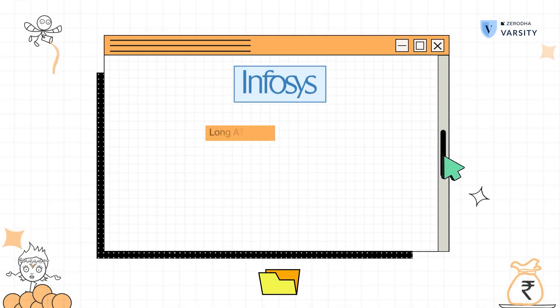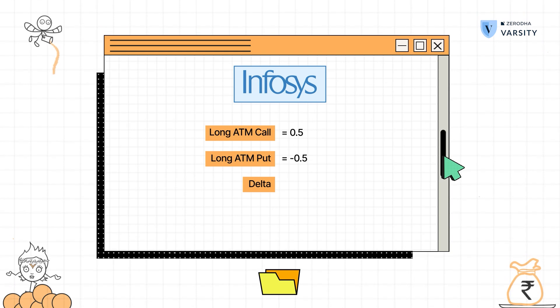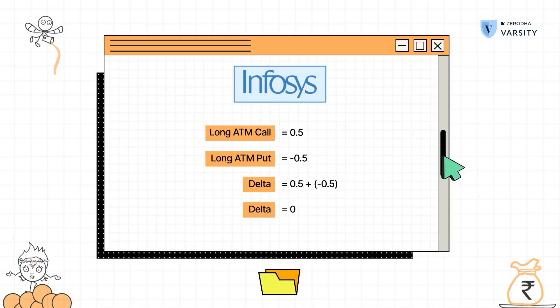Whenever you have multiple option positions in your portfolio belonging to the same underlying and the same expiry, you can always add up the deltas. For example, assume I have an at the money call option of Infosys long, and I also have an at the money put option of Infosys long. At the money options, irrespective of call or put, have a delta of 0.5. The long call has a delta of plus 0.5, and the long at the money put has a delta of negative 0.5. Adding these two: plus 0.5 and negative 0.5 gives zero delta. This is called a delta neutral position. In real life, this means irrespective of where the stock price of Infosys goes, my portfolio of two options will have zero net delta effect.